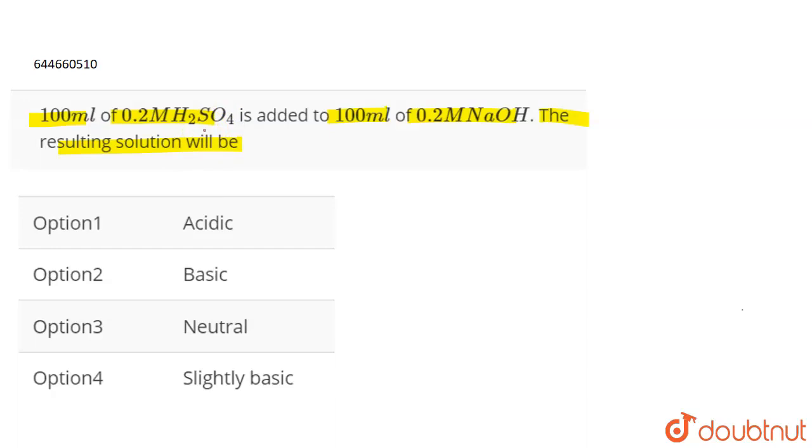will be the resulting solution. If the milliequivalence of acid is more, then it will be an acidic solution. If the milliequivalence of base is more, then it will be a basic solution. A very simple approach. And if they have equal milliequivalence, it means this is going to be a neutral solution.